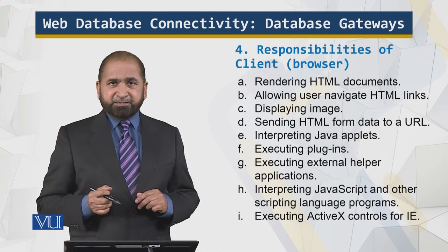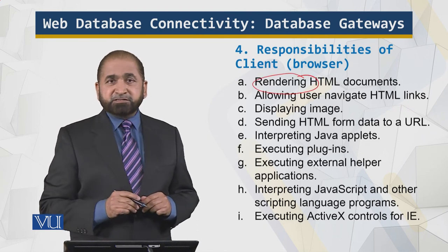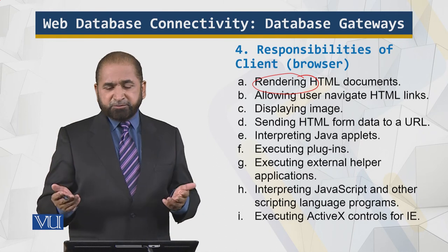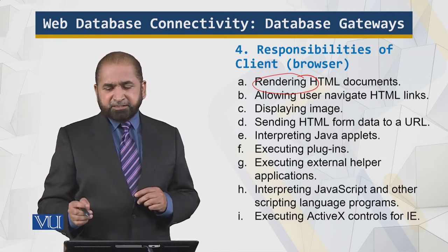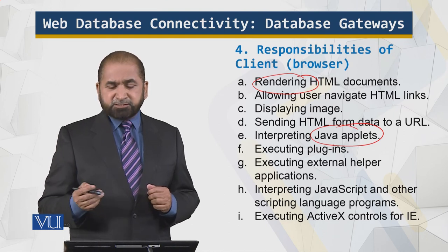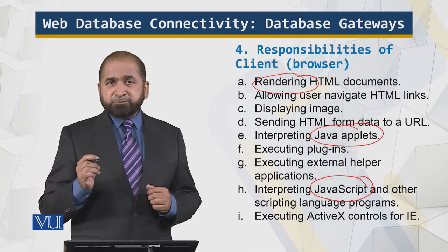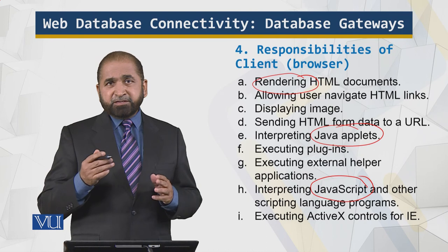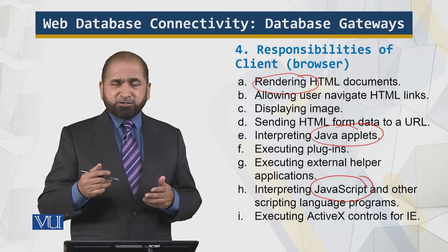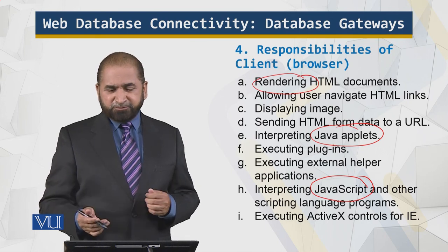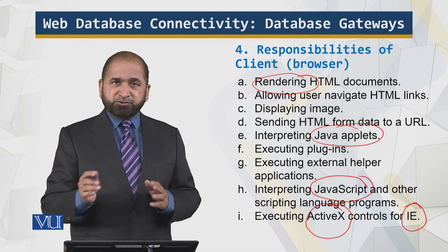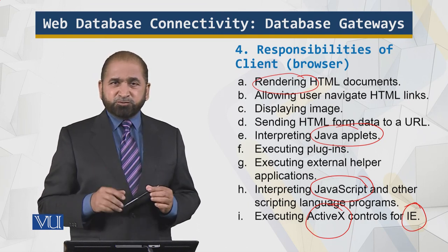What happens at the client or browser end? Rendering HTML documents — rendering means creating the document as per the HTML code, assigning color, font, shape, size, and so on. Showing images, allowing users to navigate links, sending data, interpreting Java applets that add more functionality to the website, executing plugins, and interpreting JavaScript. JavaScript is a scripting language; it is not run as executable code, it runs at the client end, and has a lot of useful functionality which we'll cover in the next module. And of course, ActiveX controls, which add functionality specific to Internet Explorer and Microsoft technology. This is all for this module.